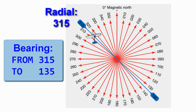That has nothing to do with our heading, by the way. We can have any heading and still be on that same radial. In this example, it is radial 315 that we are on.